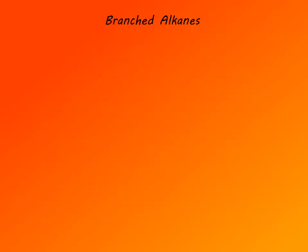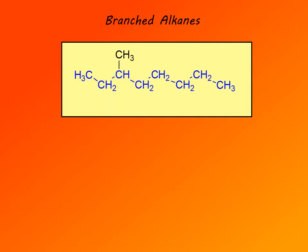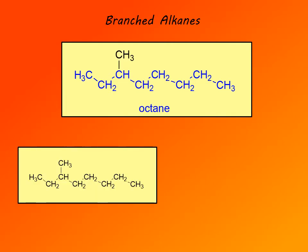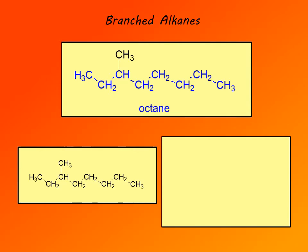Branched alkanes have more complex naming. A compound like this is named by first identifying the longest chain, shown here in blue. If we count the number of atoms, there are eight atoms in that chain, so we name that chain as octane. We first name the root — the longest chain — which forms the last part of the name. Next, we name the substituent, which is a methyl group. So this would be methyl octane.